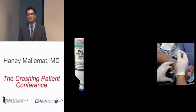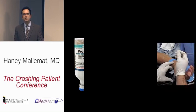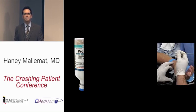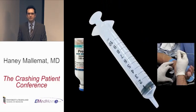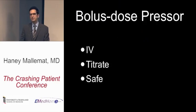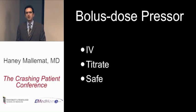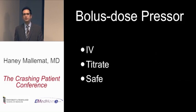The second thing to remember: if you have time, place an arterial line. These patients can rapidly fall off the hemodynamic cliff, and you want to know exactly when they become hypotensive so you can institute resuscitative measures. The last thing to remember is bolus dose pressors — drugs you give through a peripheral IV to increase blood pressure. They're very titratable, given in small doses, and safe should they extravasate into peripheral tissues.